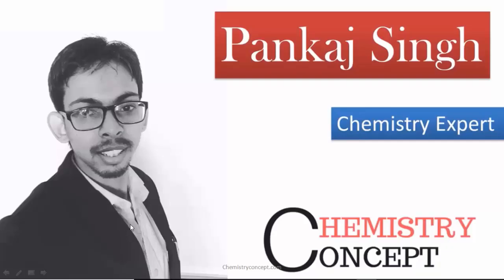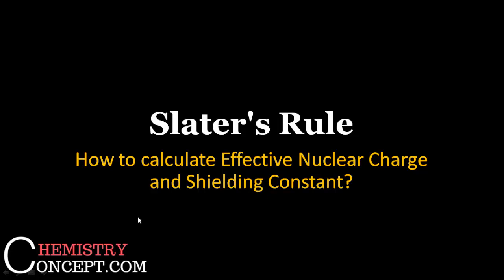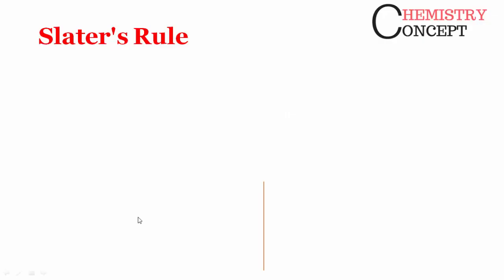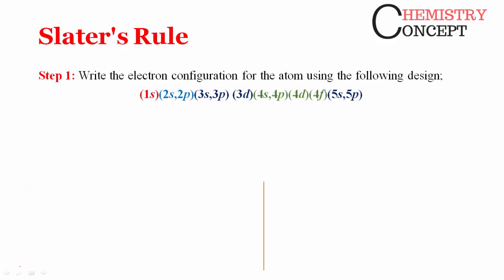Welcome to Chemistry Concept. This is Pankaj Singh and now we are going to learn Slater's Rule — that is, how to calculate effective nuclear charge and shielding constant. Slater's Rule is used to find out the shielding or screening constant. You should know what screening effect and shielding effect are. I recommend you first go through our video on shielding and screening effect before watching this video.